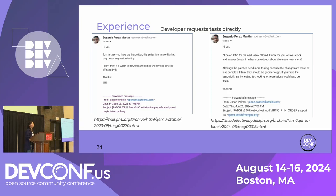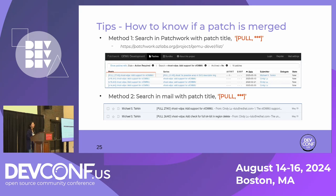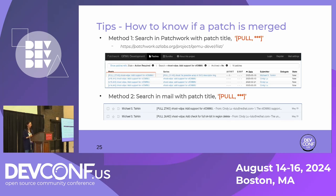They trust our tests and want them done before merging patches. Next, some tips. The first is about how to know if a patch is merged, which is important because if it is already merged, our workflow is no longer applicable — we don't need to download or apply patches, and the tested-by tag cannot be added. There are three ways to check. First, search the patch title in Patchwork. If there is a pull in the beginning of the patch entry, the patch has been merged upstream.